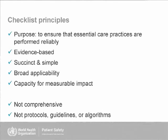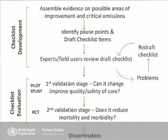We've got a schema on checklist development and testing. It starts with assembling evidence on critical omissions that will lead to harm, then identifying pause points and drafting checklist items. Boeing and the aviation industry spend a lot of time on this and helped us with both the safe surgery checklist and the safe childbirth checklist. A Boeing expert named Dan Borman specifies exactly what font to use, what size, putting action items at the front of the sentence — all these things matter when people are doing this quickly.